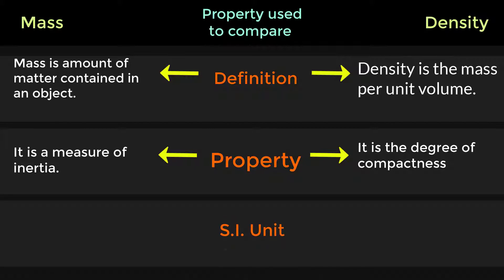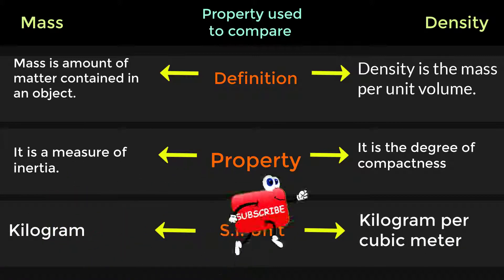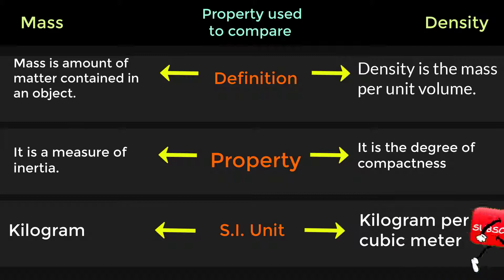SI unit. The SI unit of mass is kilogram. The SI unit of density is kilogram per cubic meter.